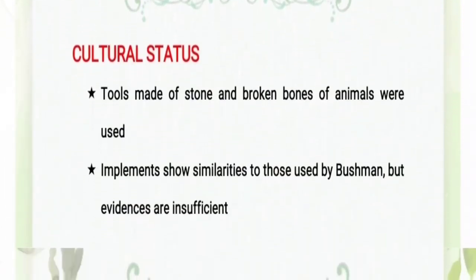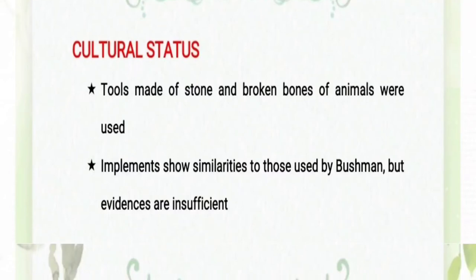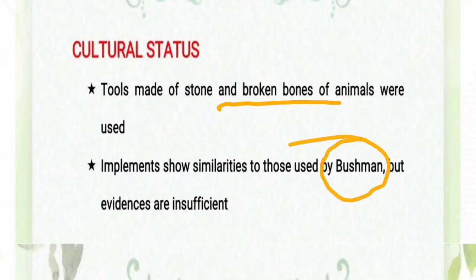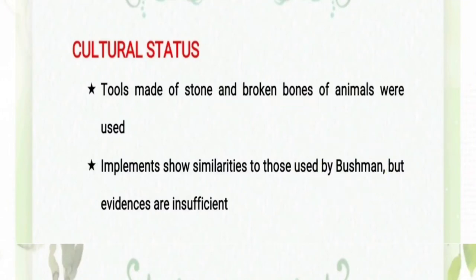Moving forward to the cultural status of the Rhodesian Man: tools made of stones and broken bones of animals were used. These implements are considered to be similar to those of the modern Bushmen, though we do not have enough evidence to prove this. It is not a proven concept, but these implements are considered to share similarities with those of modern-day Bushmen.